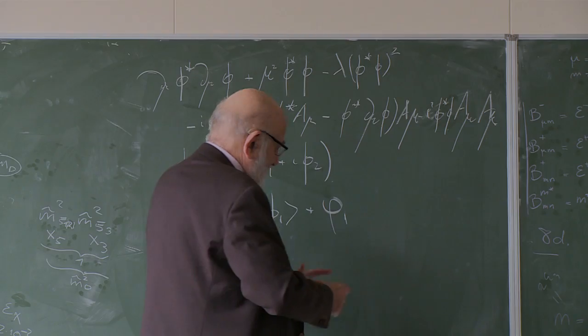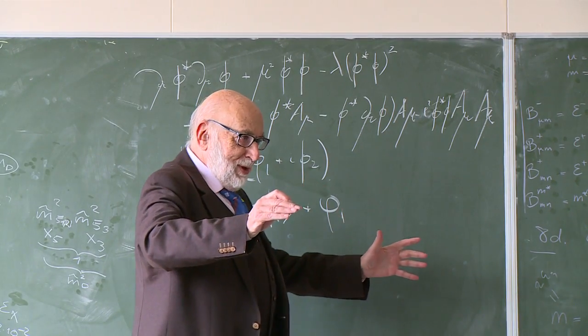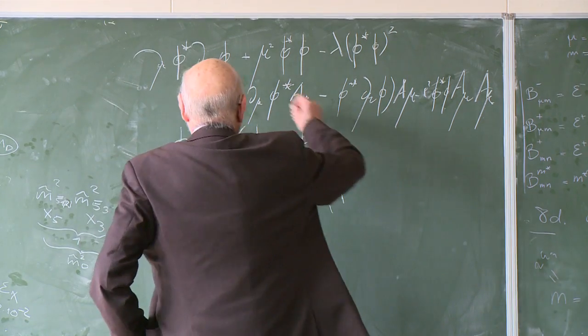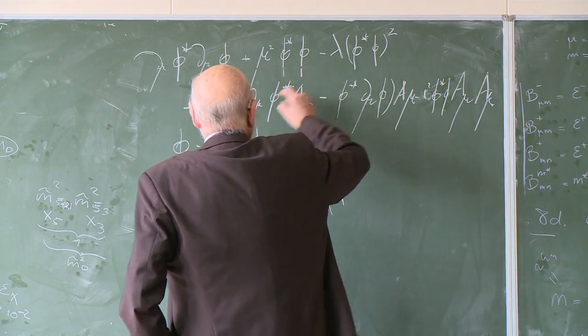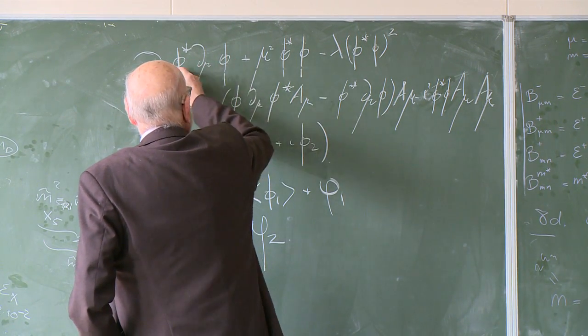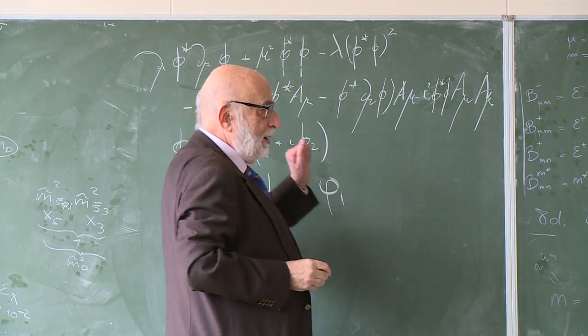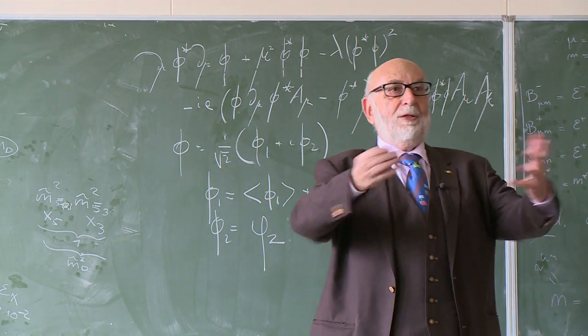Well, you see, the mechanism is built upon two things. One is called scalar fields. This is these objects which are here. And the other is what one calls a gauge field.